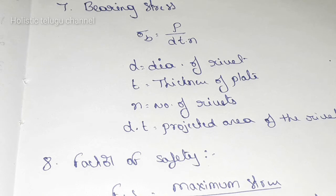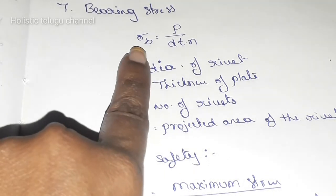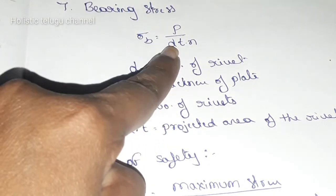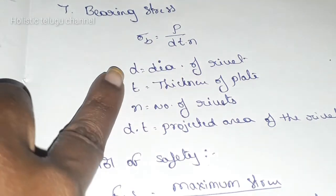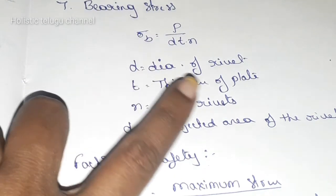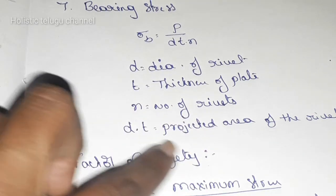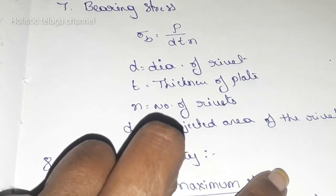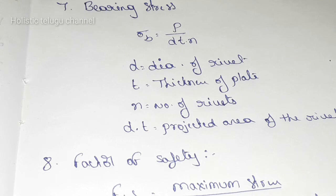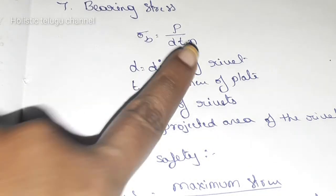Next, bearing stress. Bearing stress is sigma B, and the formula is P by DTN. D is diameter of the rivet, T is thickness of plate, N is number of rivets. DT is projected area of rivet. This is bearing stress.